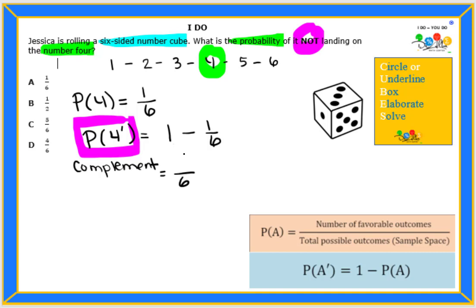Okay, so six over six minus one over six is equal to... Now the denominators are the same, so the denominator will be six, but six minus one in the numerator gives us five. So the complement or the probability of not getting a four is five out of six.